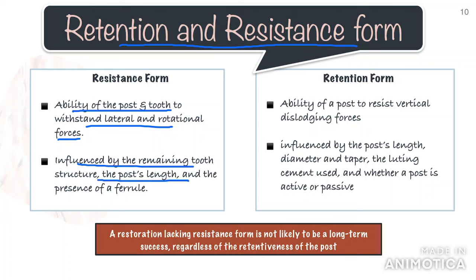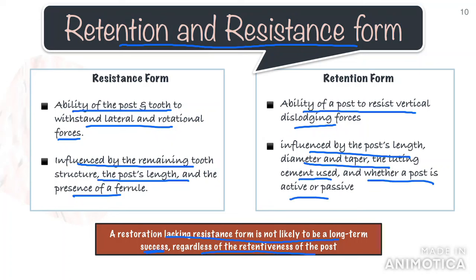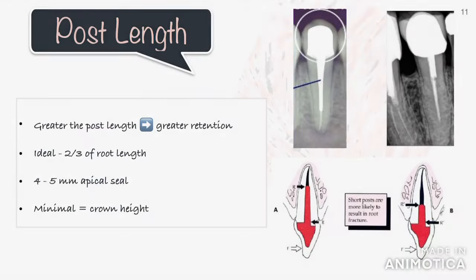Resistance form is influenced by the remaining tooth structure, the presence of ferrule, and also the post's length. A restoration lacking resistance form is not likely to be a long-term success, regardless of the retentiveness of the post. Retention form, on the other hand, is the ability of the post to resist vertical dislodging forces. It is influenced by the post's length, diameter and taper, the luting cement used, and whether the post is active or passive.